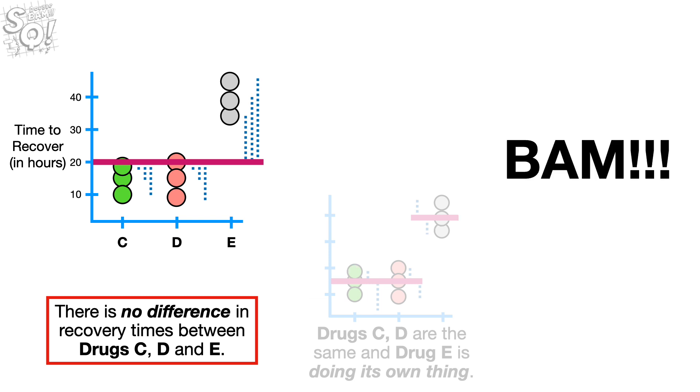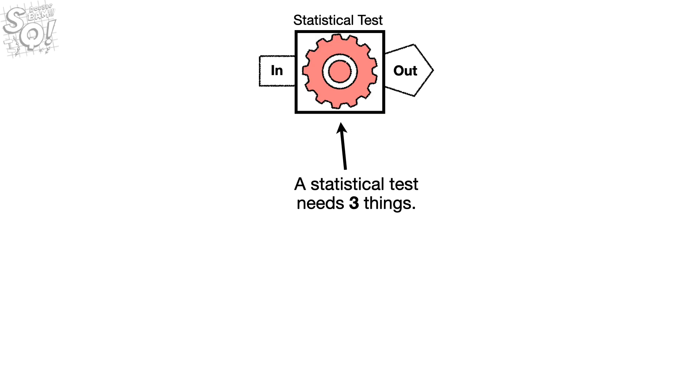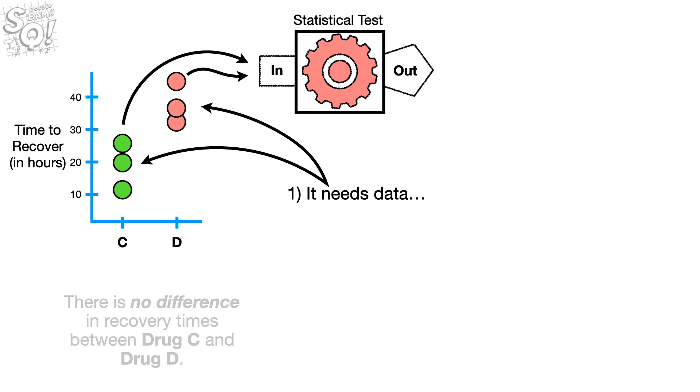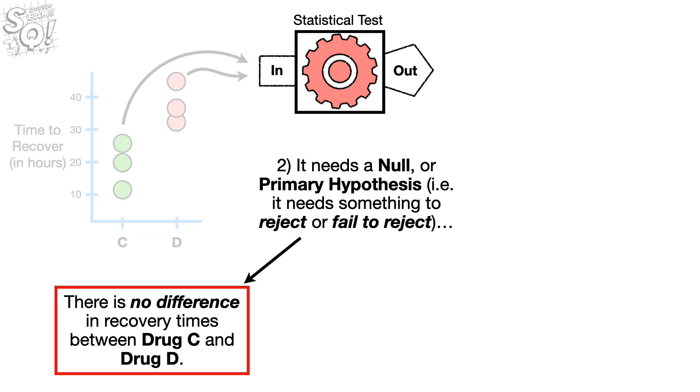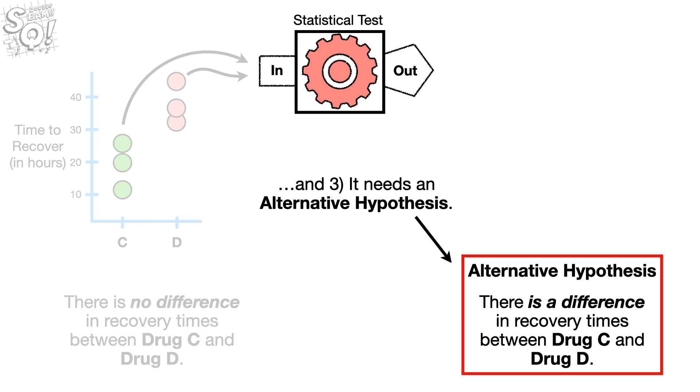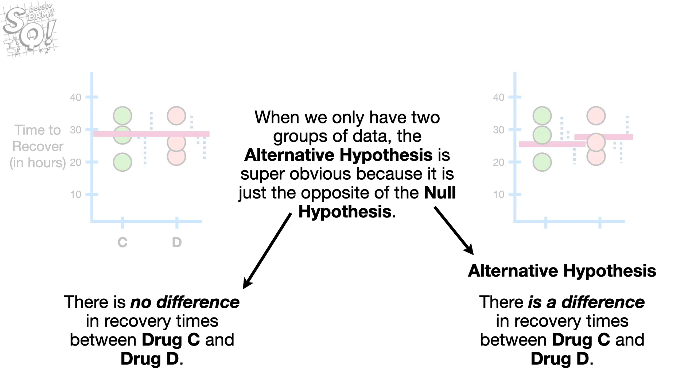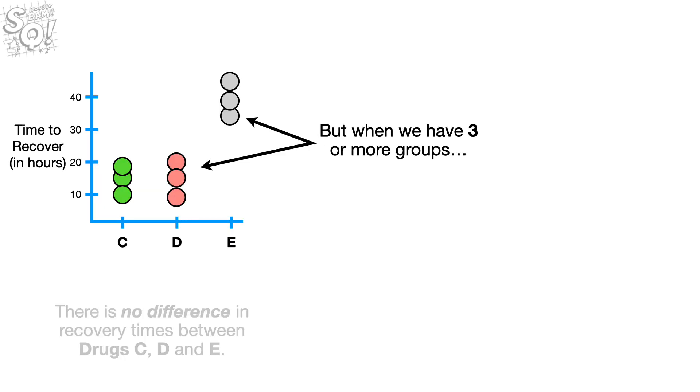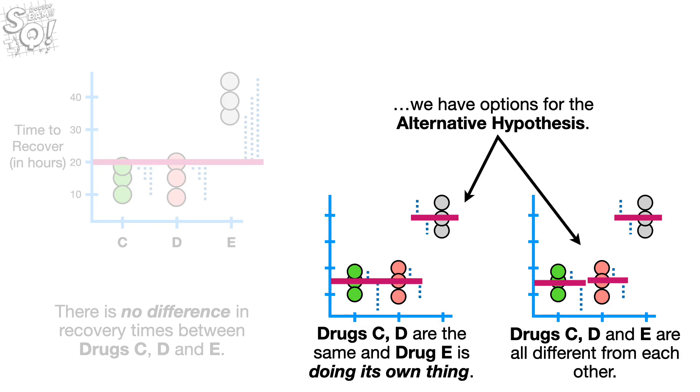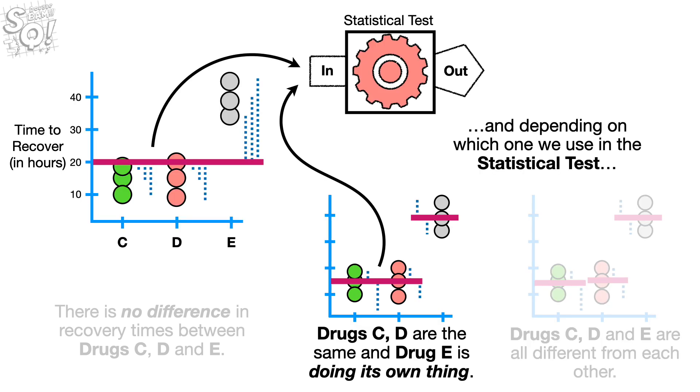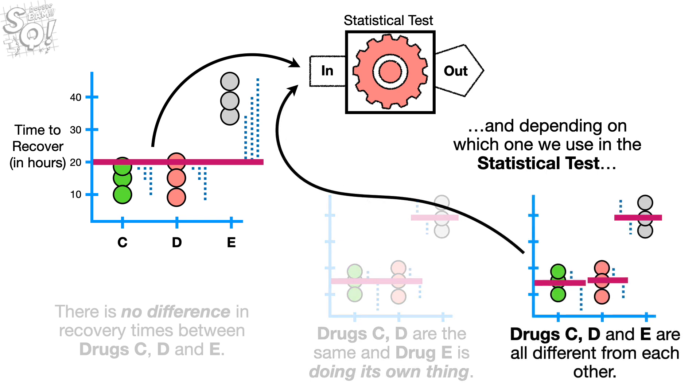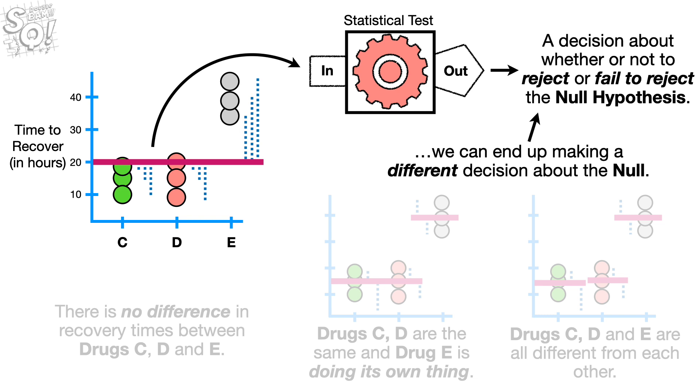BAM! In summary, a statistical test needs three things. One, it needs data. Two, it needs a Null or Primary Hypothesis. And three, it needs an Alternative Hypothesis. When we only have two groups of data, the Alternative Hypothesis is super obvious because it is just the opposite of the Null Hypothesis. But, when we have three or more groups, we have options for the Alternative Hypothesis. And, depending on which one we use in the statistical test, we can end up making a different decision about the Null. Double BAM!